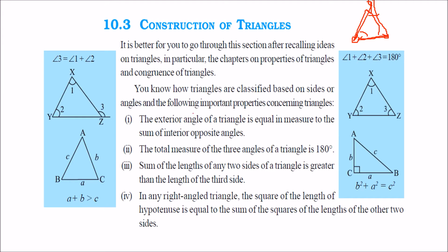Let us recall the properties we know about triangles. First, the exterior angle is equal to the sum of the interior opposite angles. Second, the total measure of all angles of a triangle is 180 degrees. Third, the sum of the lengths of any two sides must be greater than the third side. And for any right-angle triangle, b² + a² = c², where c is the hypotenuse.